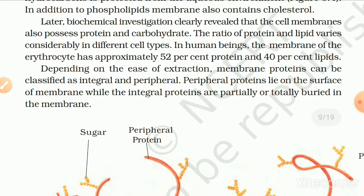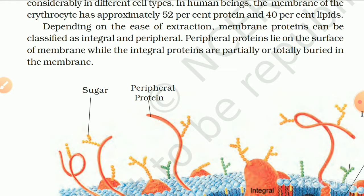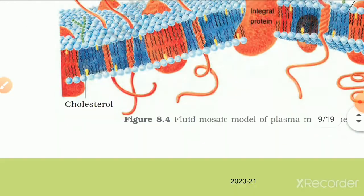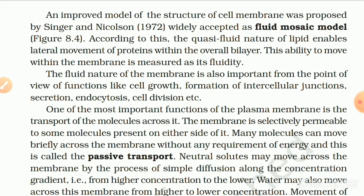Biochemical investigations revealed that the cell membrane also possesses proteins and carbohydrates. The ratio of protein to lipids varies considerably in different cell types. In human beings, the membrane of the erythrocyte has approximately 52% protein and 40% lipids. Depending on ease of extraction, membrane proteins can be classified as integral and peripheral. Peripheral proteins lie on the surface of the membrane, while integral proteins are partially or totally buried in the membrane. An improved model of the cell membrane was proposed by Singer and Nicholson, 1972, widely accepted as the Fluid Mosaic Model.